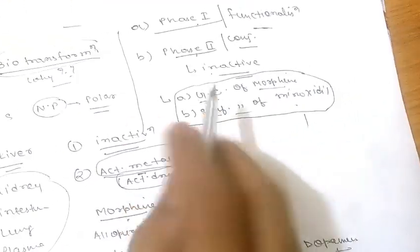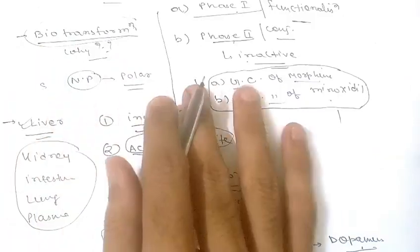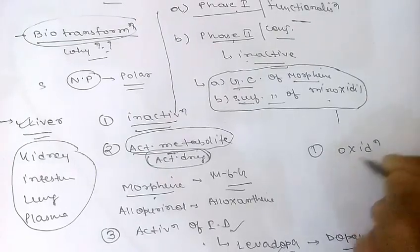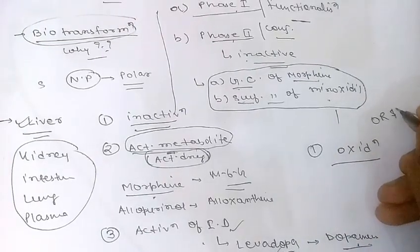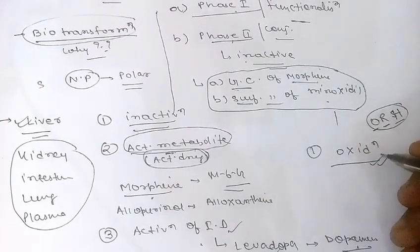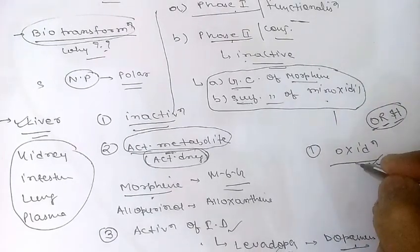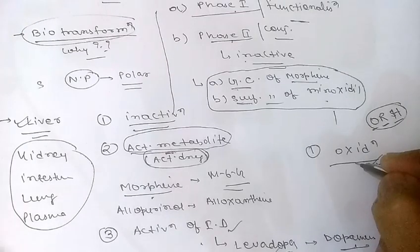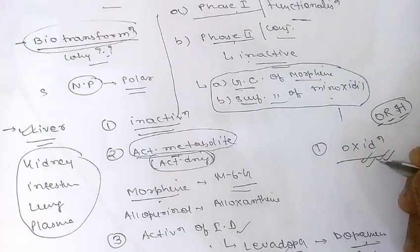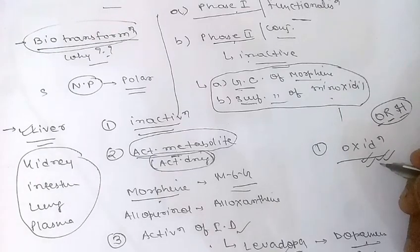In phase one reactions, the first reaction is oxidation. Oxidation involves the addition of an oxygen radical or removal of hydrogen. Oxidation reactions are the most important drug-metabolizing reactions. Common oxidation reactions include hydroxylation, oxygenation at carbon, nitrogen, or sulfur atoms, dealkylation, and oxidative deamination.